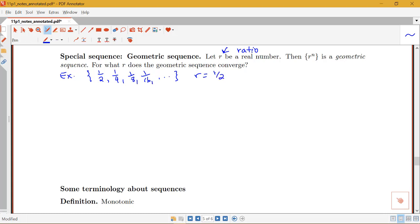The nth term is one half to the n. Looking at these terms here, we see that as I'm taking one half of the previous term each time, my terms are getting smaller and smaller. It looks like my nth term is actually going to end up converging to zero. So this is a sequence that converges.